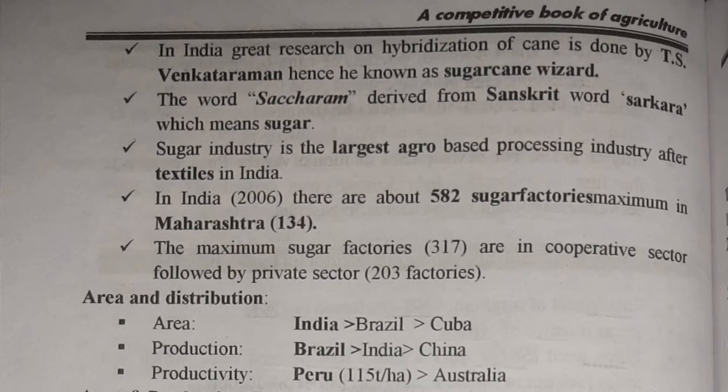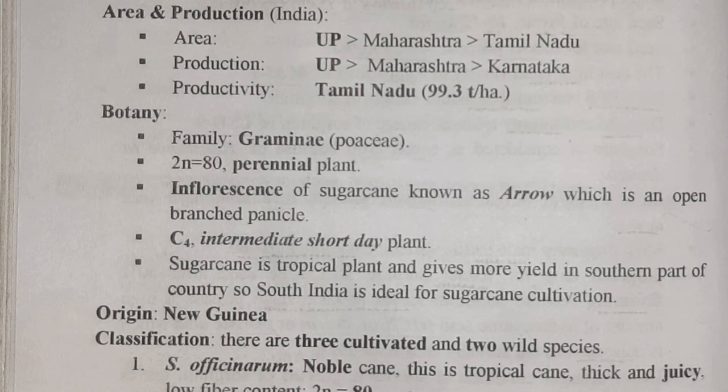Regarding area and distribution: in area, India is highest, followed by Brazil and then Cuba. In production, it is Brazil, India, China (BIC). In productivity, Peru is highest at 115 ton per hectare, followed by Australia. In India, area-wise top states are UP, Maharashtra, Tamil Nadu; production-wise UP, Maharashtra, Karnataka; and in productivity, Tamil Nadu at 99.3 ton per hectare.